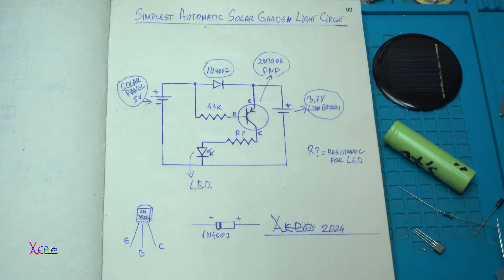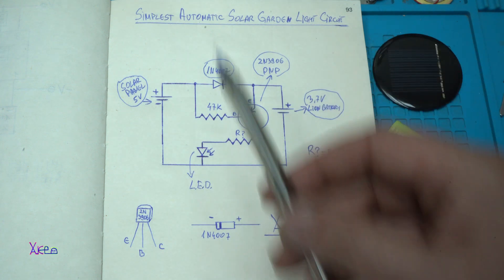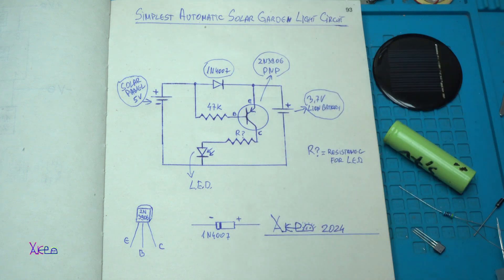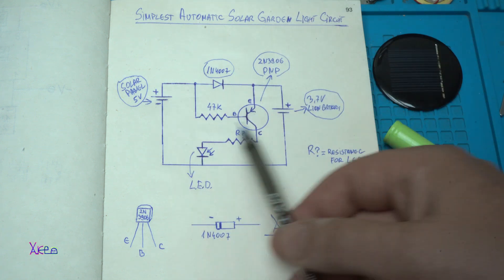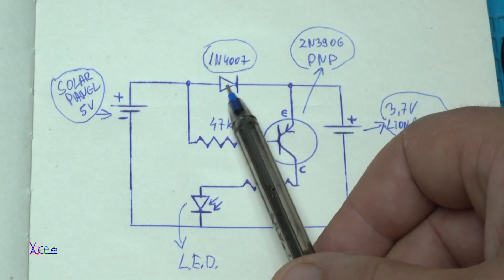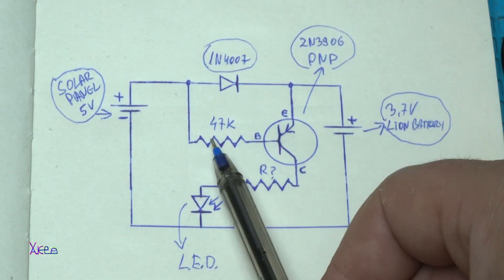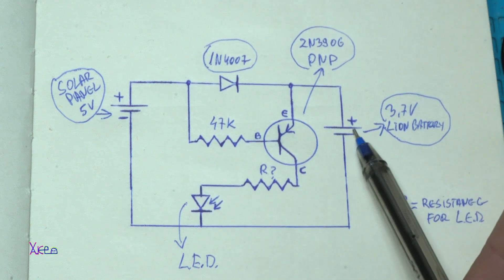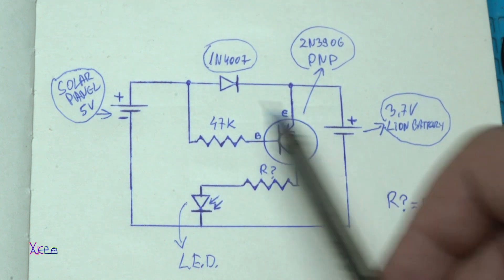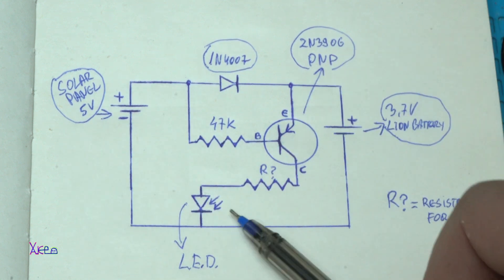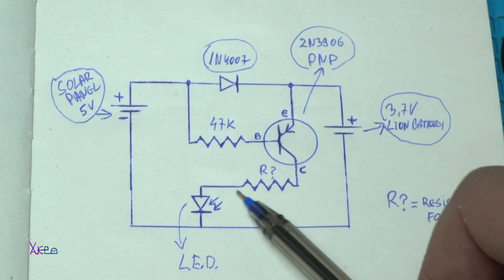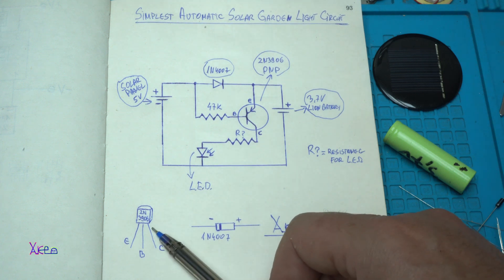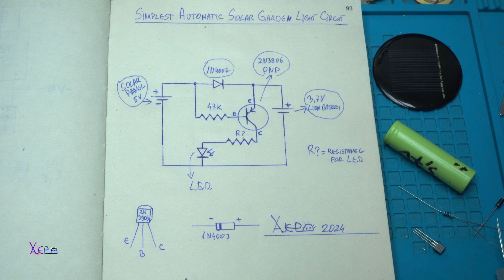Here is the circuit diagram for the simplest automatic solar garden light circuit. As I said, it has 7 components: the diode, the transistor, the 47 kilo ohm resistor, here is connected the rechargeable battery, here is the solar panel, and the LED diode through the resistor. Here is the pinout of the transistor you can see and also for the diode.